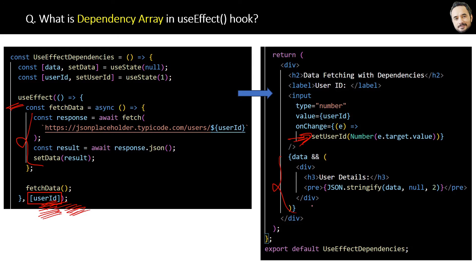One question is: why is the dependency a array? It could be a single value also. The reason is that you may have multiple dependencies — userId, username — multiple items are possible.